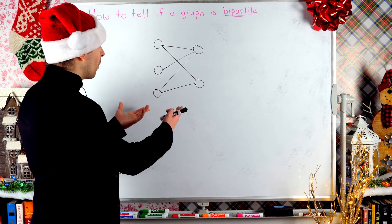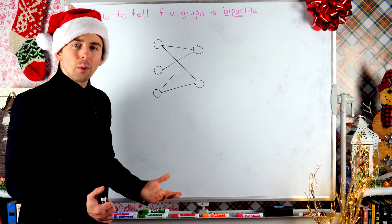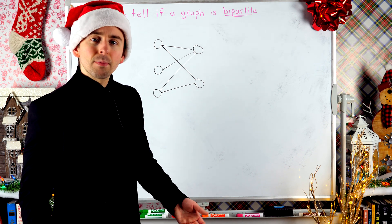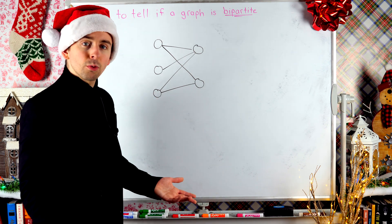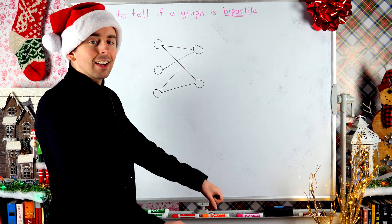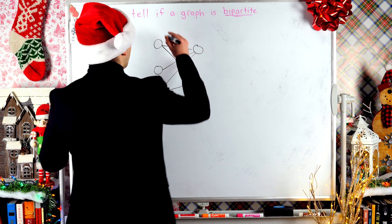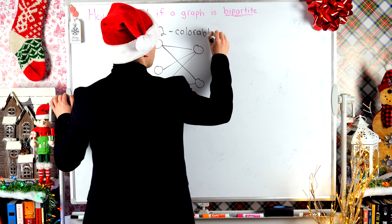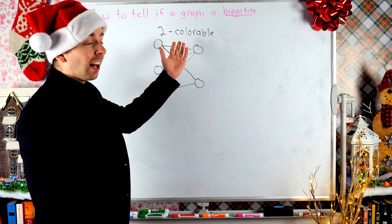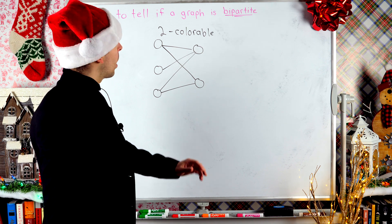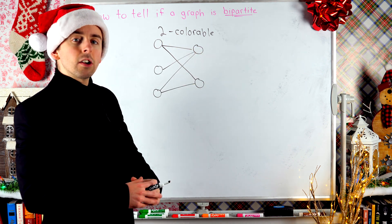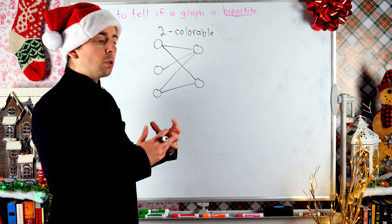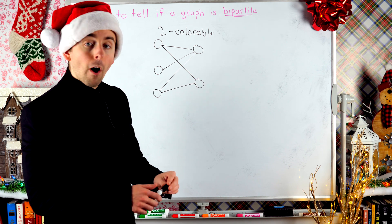But graphs won't always be drawn so nicely, and so we may wonder how we could tell by hand whether or not a graph is bipartite even if it isn't drawn in such a clear way. A graph that's bipartite is necessarily something we call two-colorable. What it means for a graph to be two-colorable is that we can color its vertices with only two colors such that no two vertices of the same color are adjacent.